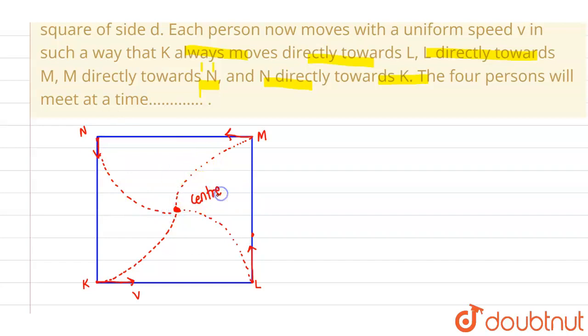We are also given that the side of the square is d. If this is d and this is v and they are meeting at the center...